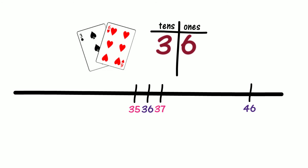Where would 26 be? Why would 26 be on the left of 36? Is it because 26 is 10 lower than 36? In which direction do numbers get lower on a number line? Do numbers get lower as we move to the left? Is this the only place that 26 could be? Are 26 and 46 the same distance from 36? Are 26 and 46 both 10 apart from 36? Are we adding 10 to 36 to get 46? Are we subtracting 10 from 36 to get 26?